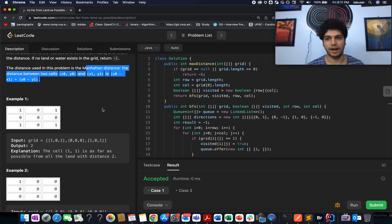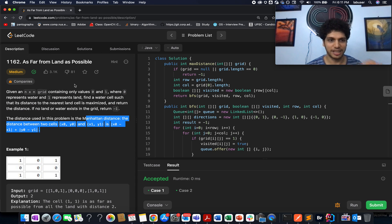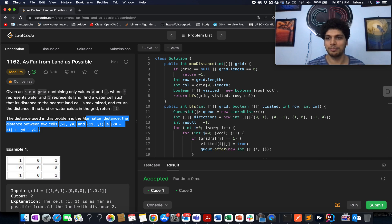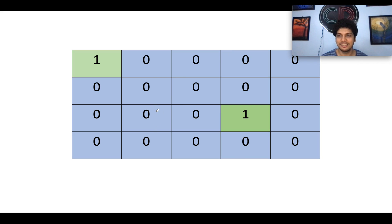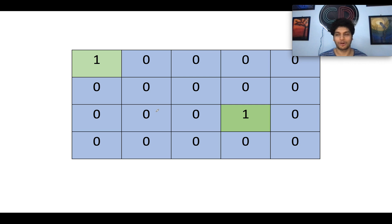I'll be talking about the algorithm in the presentation. If you are following Coding Decoded, you will feel this is an easy level question. If you have already solved the 'Rotten Oranges' or 'Koko Eating Bananas' questions, this would be a cakewalk. The algorithm we are going to use to solve all such questions of this type is nothing but BFS reversal — the same concept applies here as well.